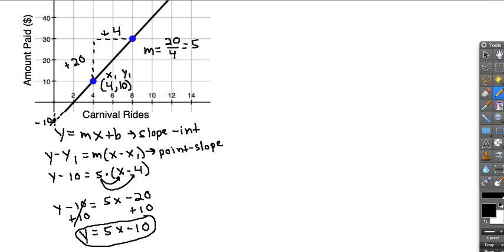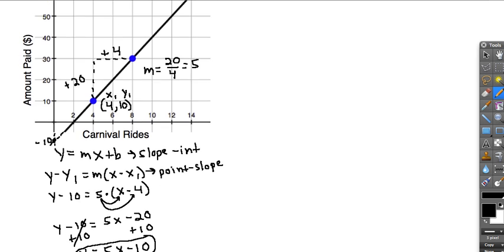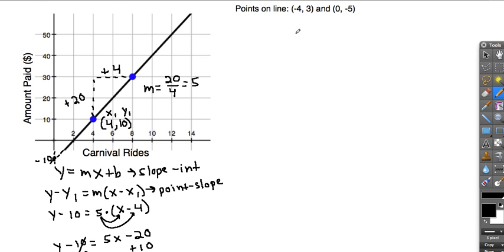In a second situation, we're going to look at what happens if we have two points. So here I've got the points negative 4, 3, and 0, negative 5. And we still want to get an equation of the form y equals mx plus b.